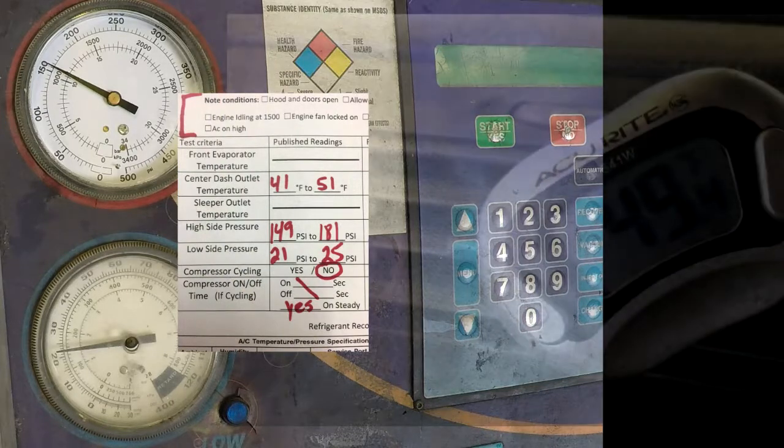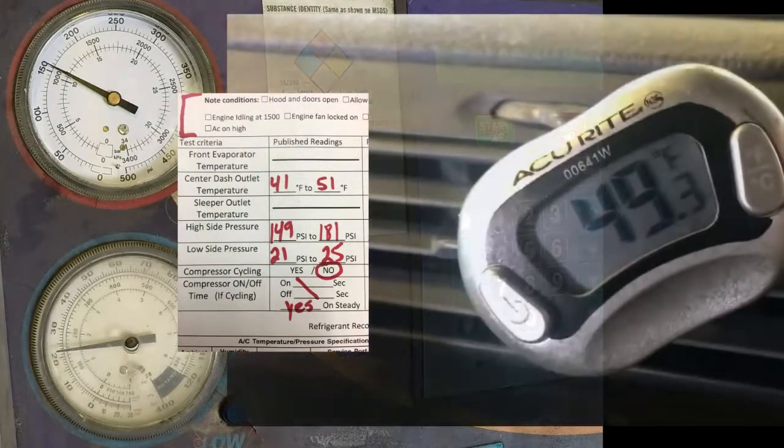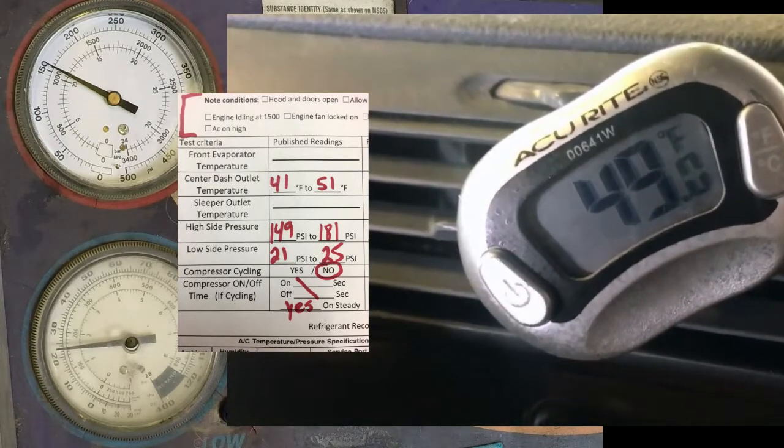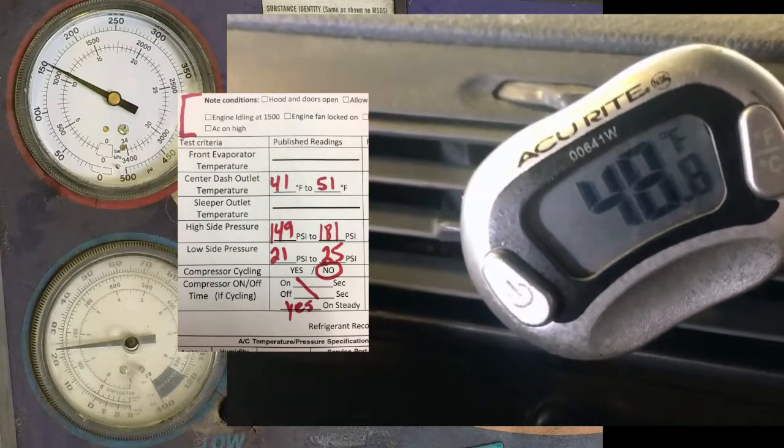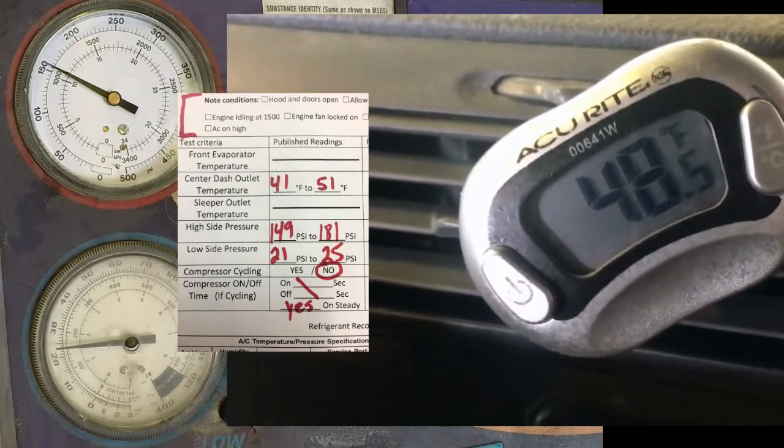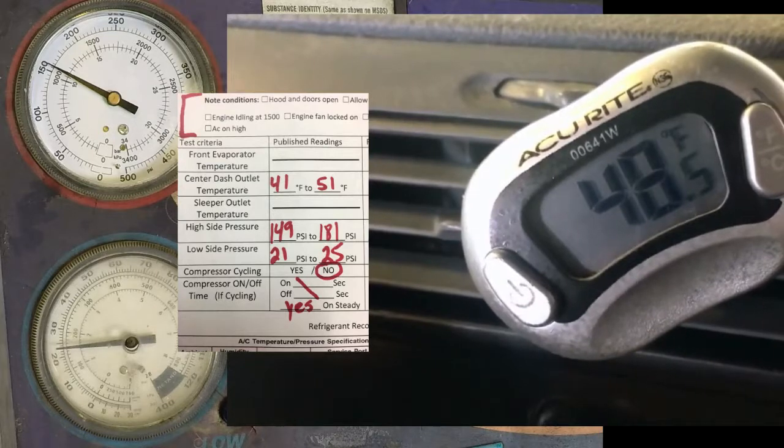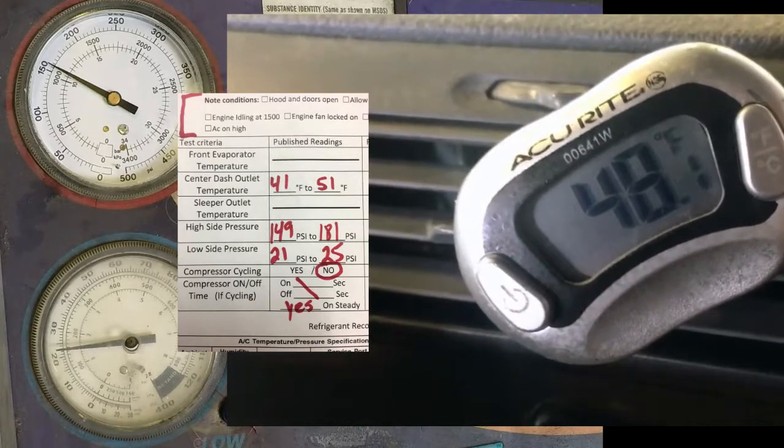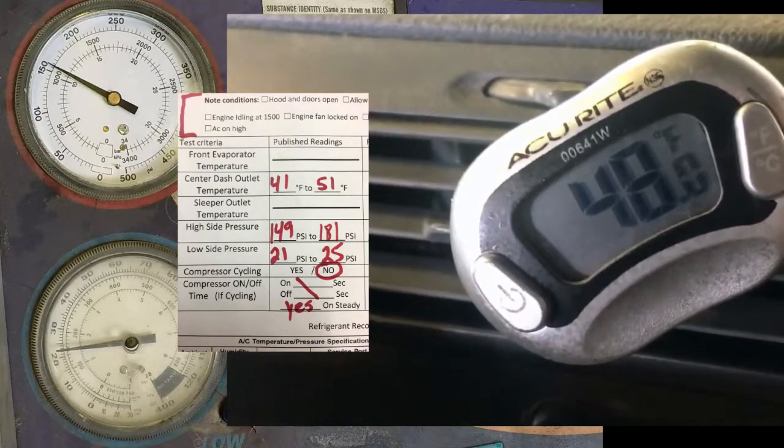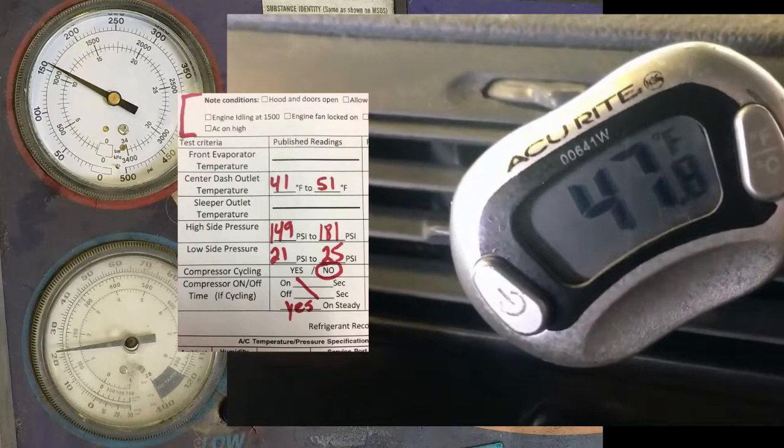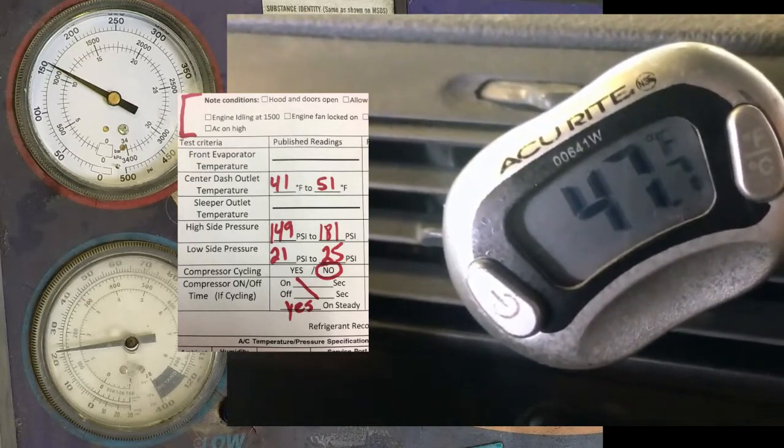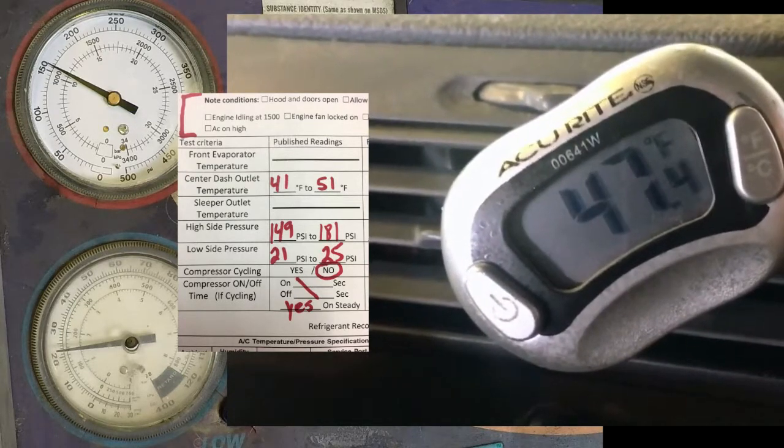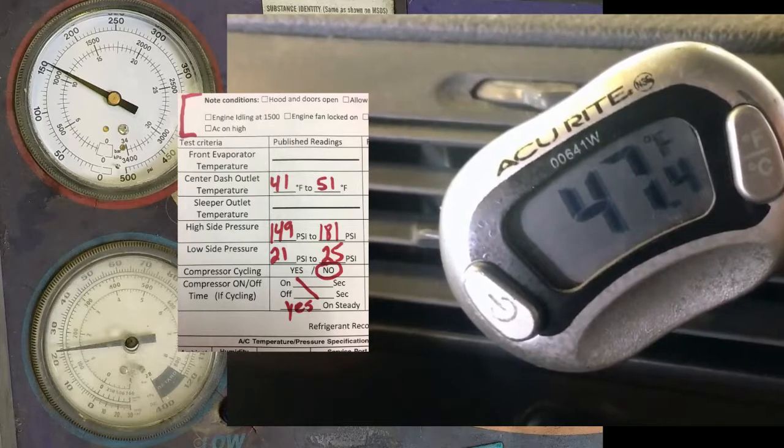Remember what we wrote down on our performance sheet. This is what Freightliner says it should be today. Let's start matching it up. Our temperature is dropping. It's already in range. You can see it's still dropping. I like to get the lowest temperature out of the dash. The high side is reading about 155, 160 and that's in range. The low side is reading about 25 and that's at the very top end of the range. So everything is falling in the spec here already and it's only been running for just a few minutes. The clutch is on steady.